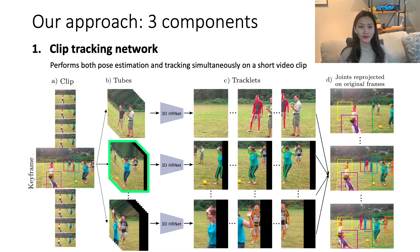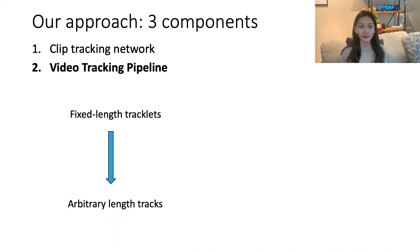Importantly, all the pulses need to belong to the same person, even when they become occluded or move out of the tube frame, in which case the network should not output any prediction, even if other people are present. Our network builds upon the successful HRNet architecture and extends it to 3D. Next, our video tracking pipeline works as a tailor to sew these fixed-length tracklets together into arbitrary-length tracks, based on pulses in overlapping frames.